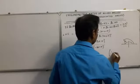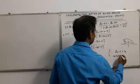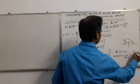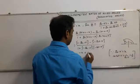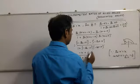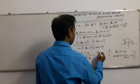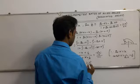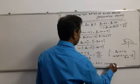Since tan 17° = x, cot 17° = 1/tan 17° = 1/x. Substituting: numerator is minus x minus (1/x), and denominator is 1 plus (minus x)(minus 1/x) = 1 + 1 = 2. So the expression equals (−x − 1/x) / 2 = (1 − x²) / 2x, which equals RHS. Hence proved.